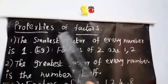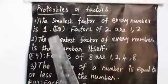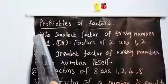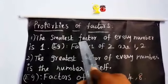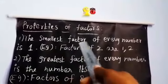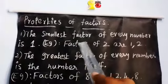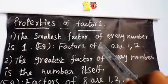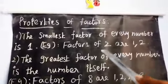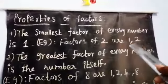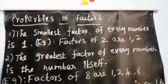Properties of factors — there are three types. First property: the smallest factor of every number is 1. For example, the factors of 2: checking the tables, 1 and 2 come. So the factors of 2 are 1 and 2.